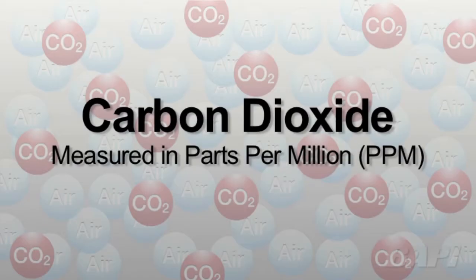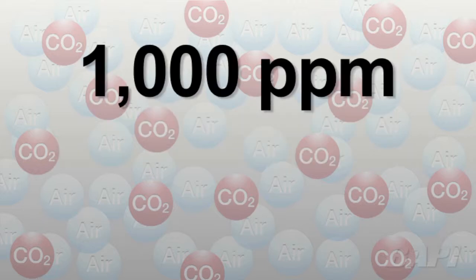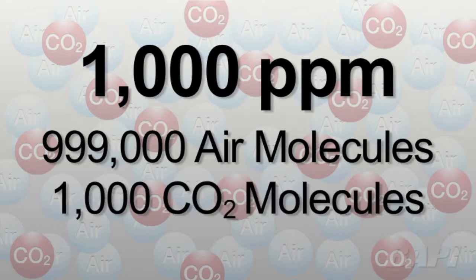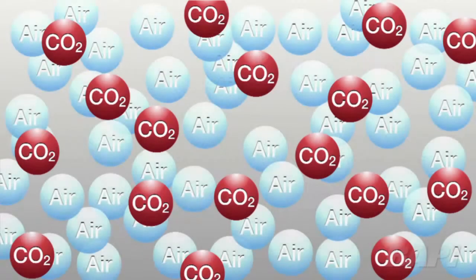Carbon dioxide in air is normally measured in parts per million, or ppm. At 1000 ppm of carbon dioxide, a volume of air containing 1 million air molecules would contain a mixture of 999,000 air molecules and 1,000 carbon dioxide, or CO2, molecules.